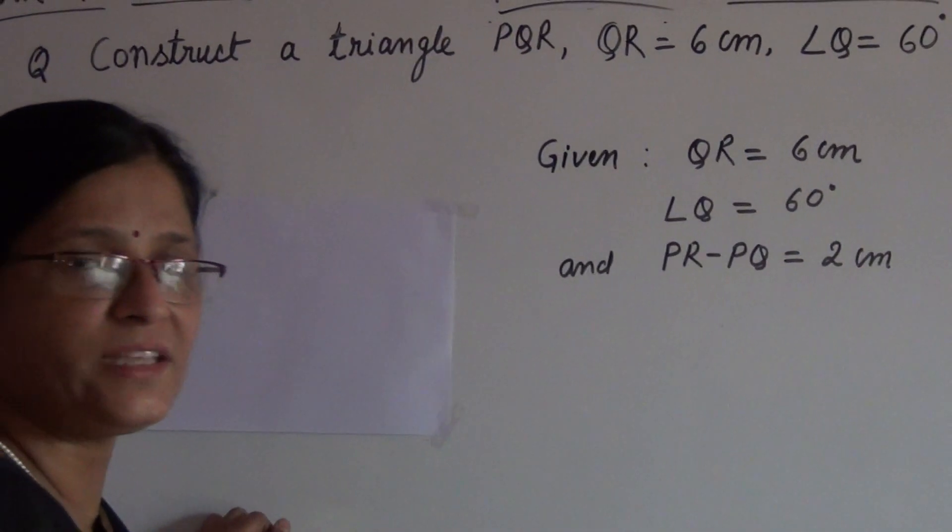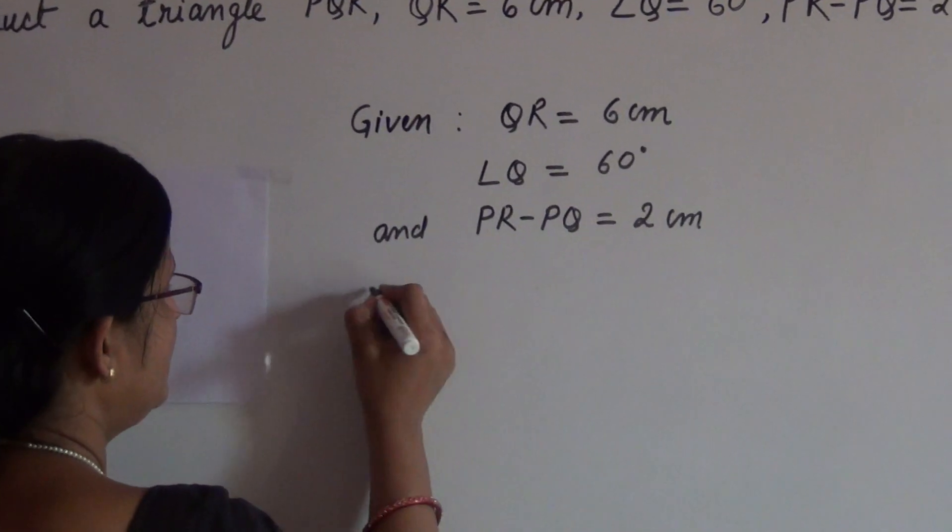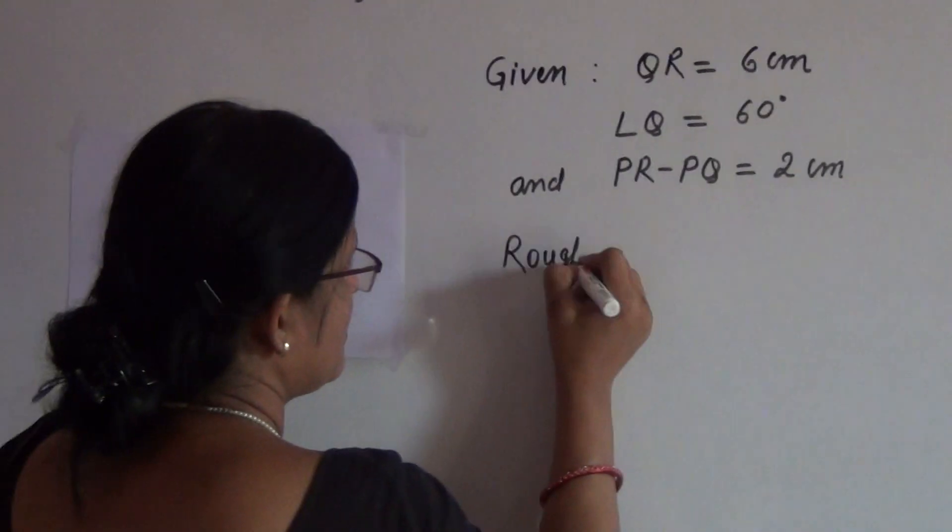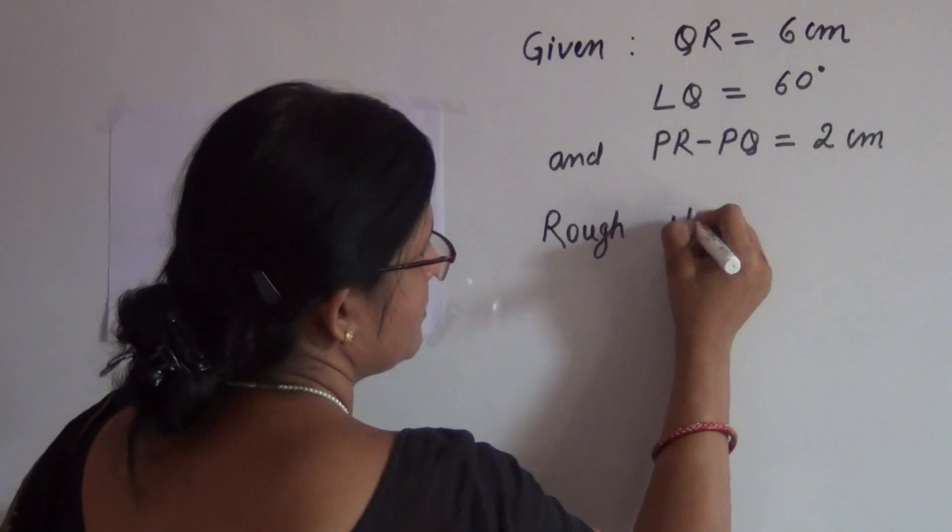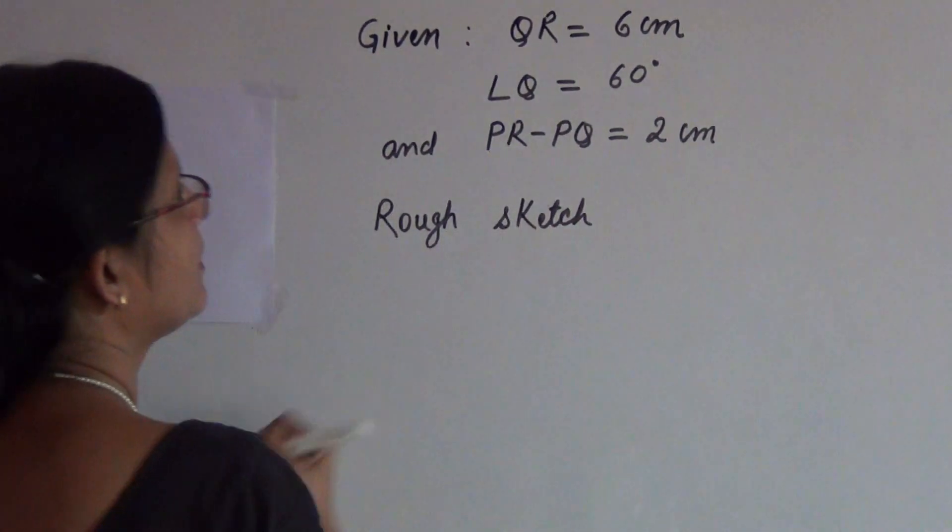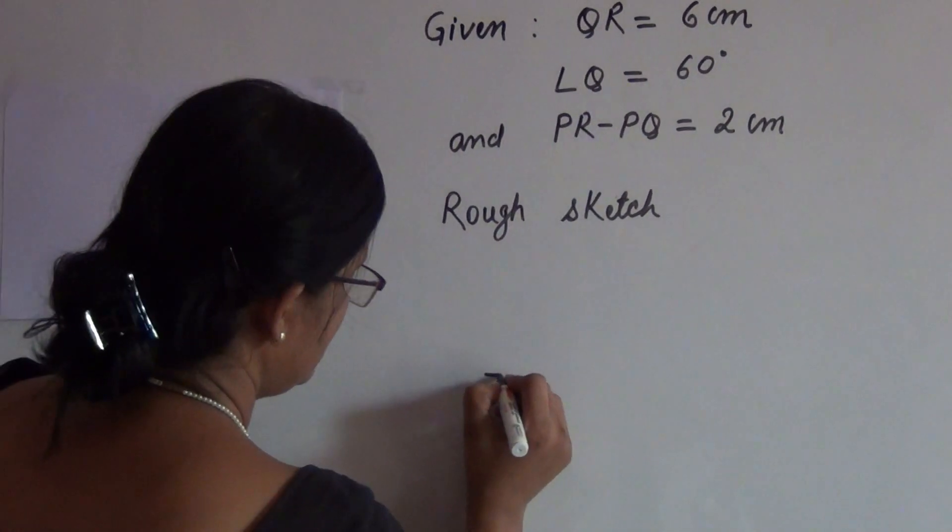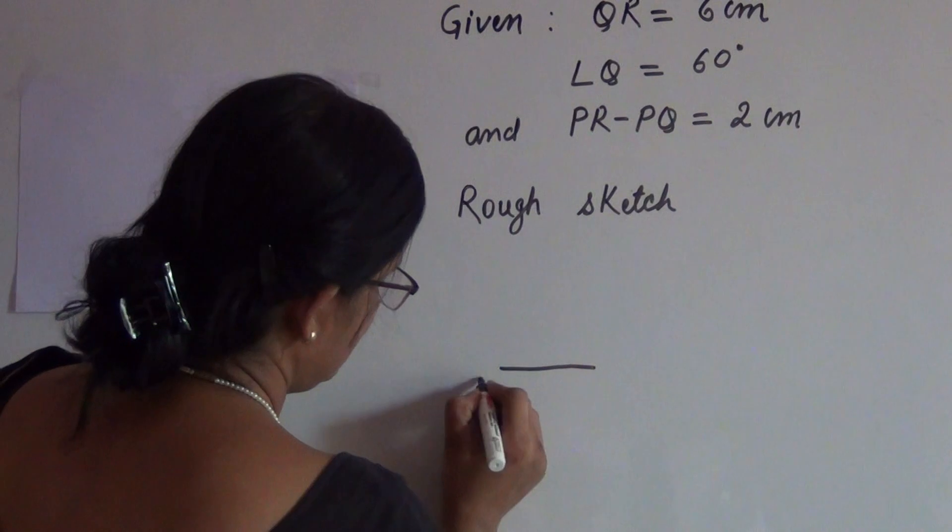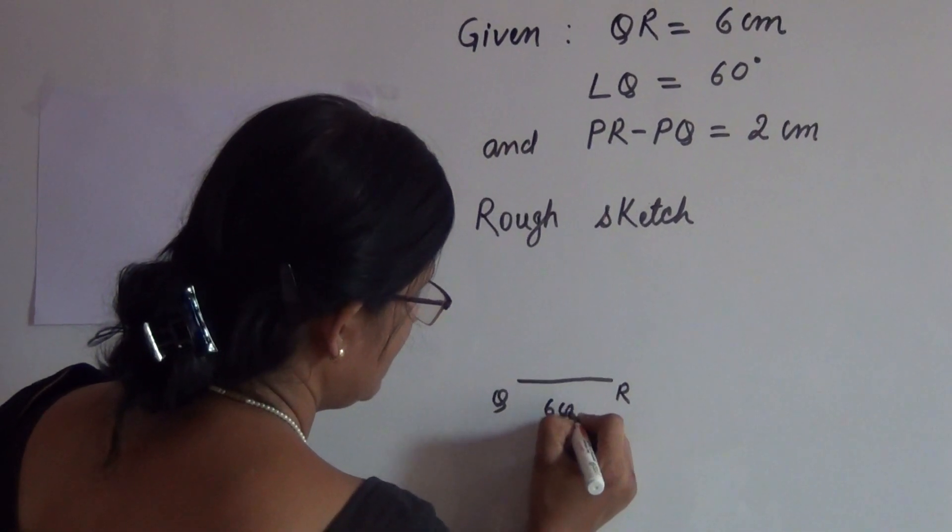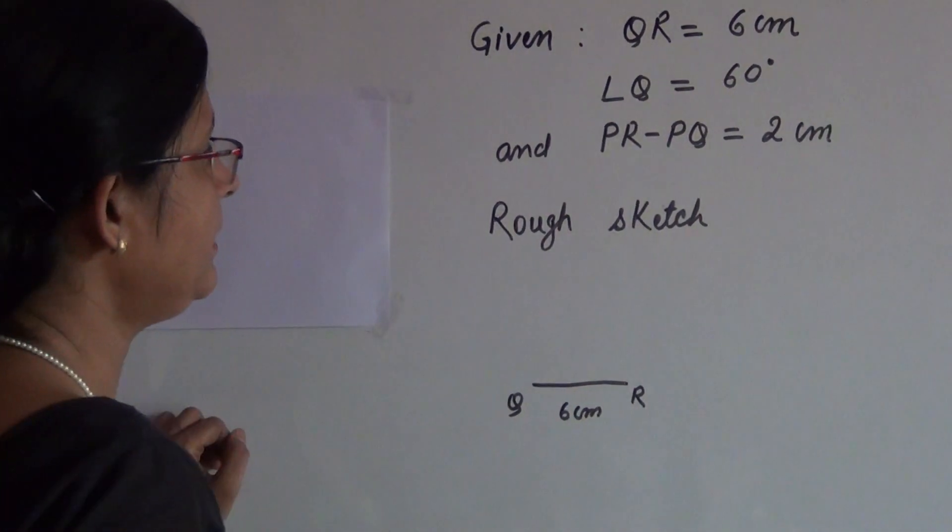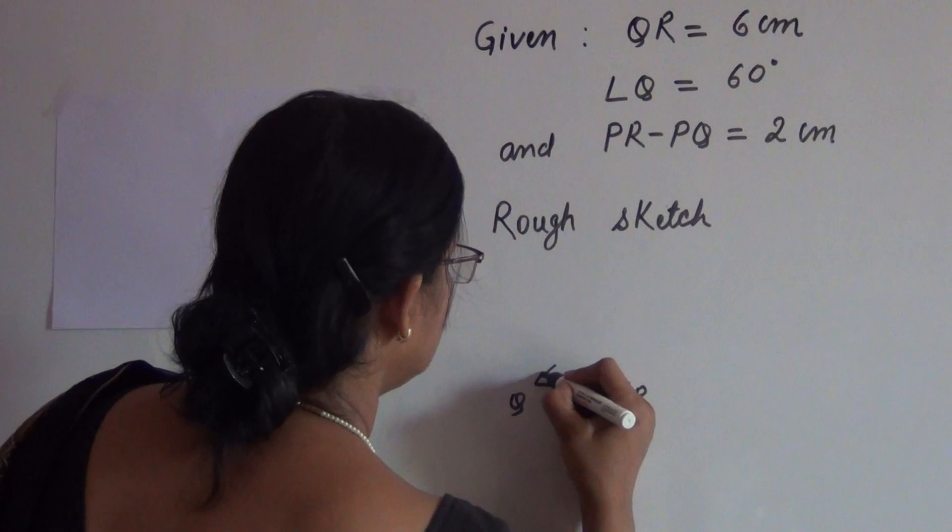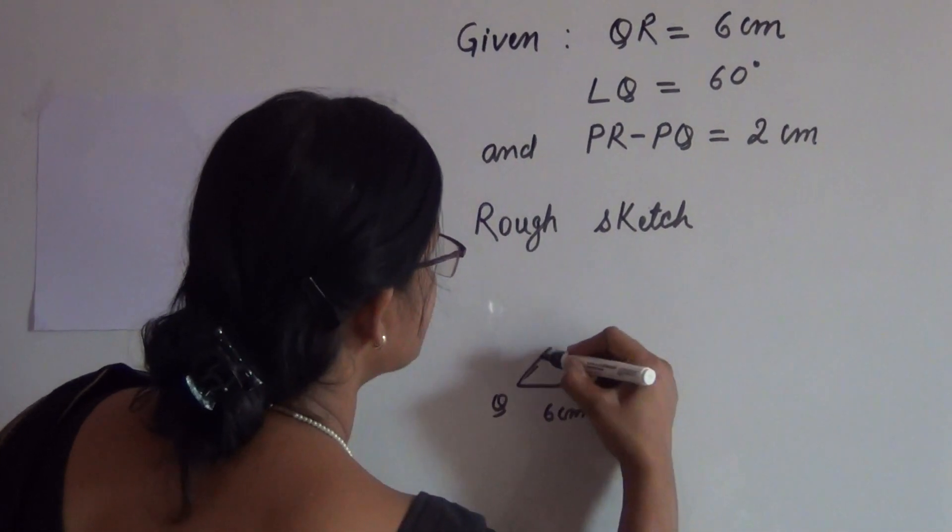Let us draw the rough sketch before we start the actual construction. QR is 6 centimeters, angle Q is 60 degrees. This will be the inclination of 60 degrees.